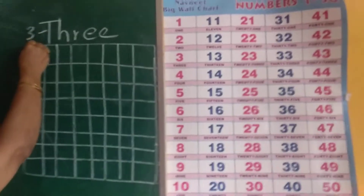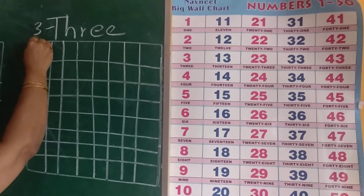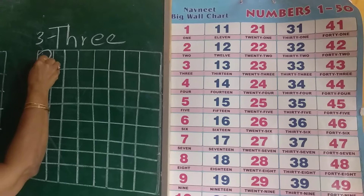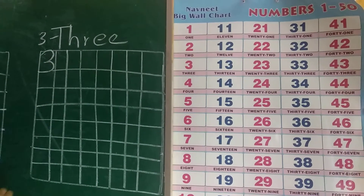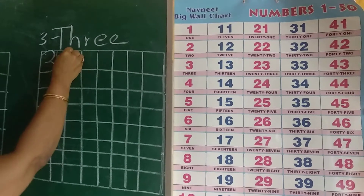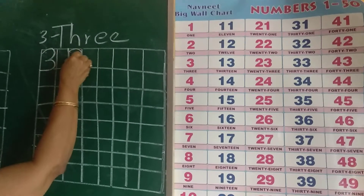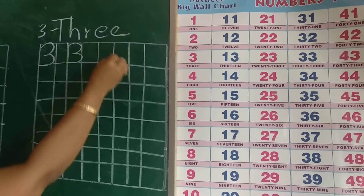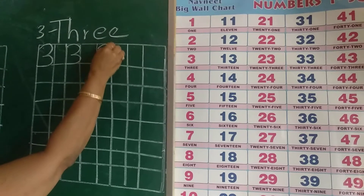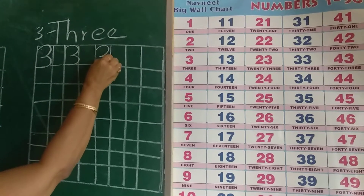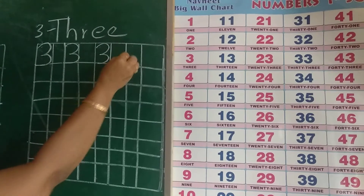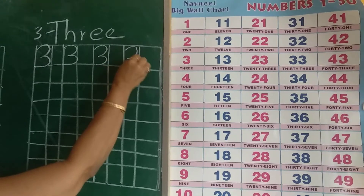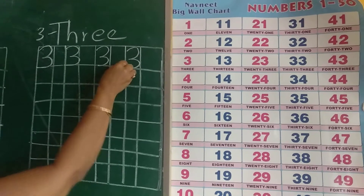2 half circles. You have to write 2 half circles. This is number 3. Half circle. Half circle.